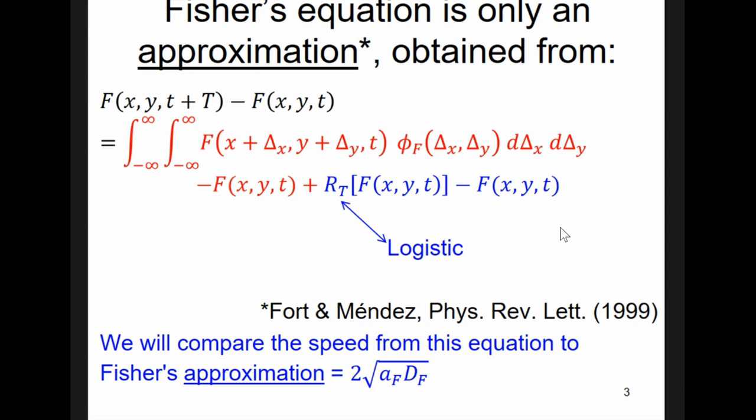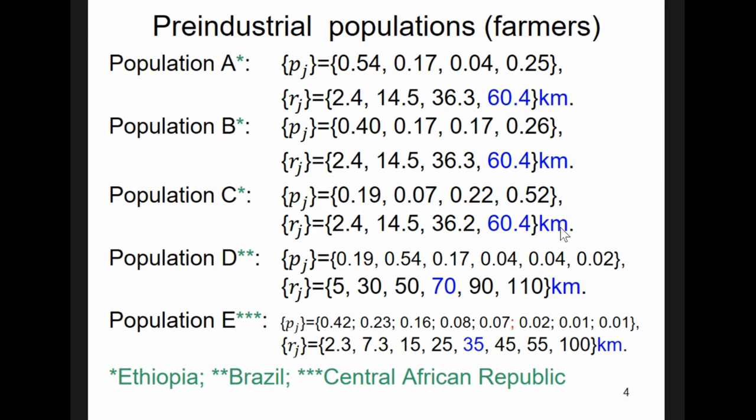But is this a good approximation? Or, in other words, can Fisher's equation be applied to humans or not? Well, we can answer this question if we compute the speed from this equation and compare the result to Fisher's speed. In order to do so, we consider here five pre-industrial populations and their dispersal probabilities. This means, for example, that 54% of this population move a distance of about 2.4 km.